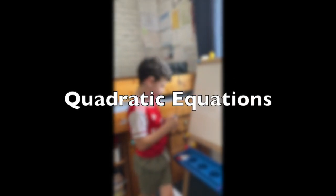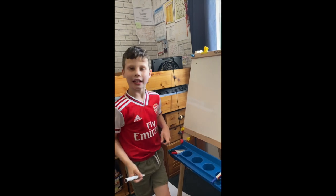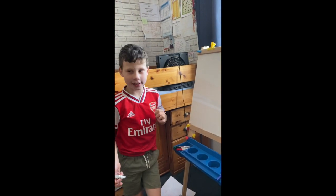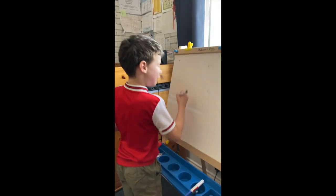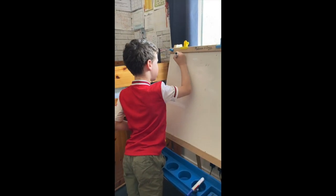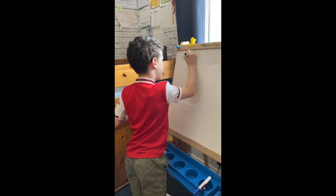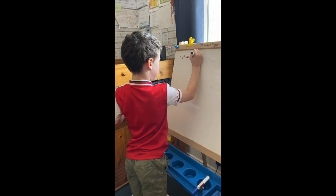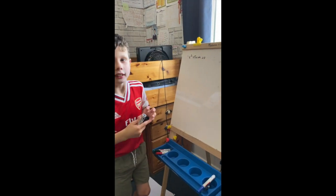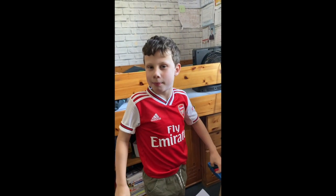Today we are going to be focusing on quadratics. This lesson is aimed at Year 10s. We're going to start off with something simple like x squared plus 5x plus 4 equals 0. It's very important that you include the equals 0, or it won't equal anything and it doesn't make sense.